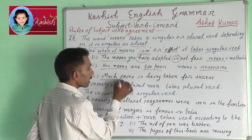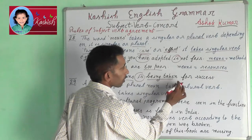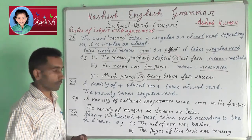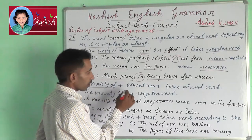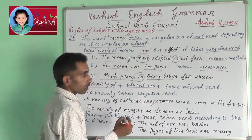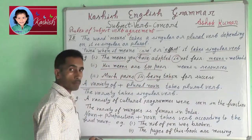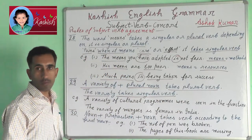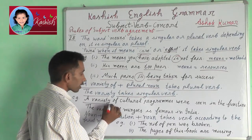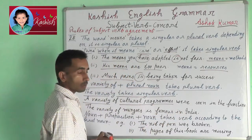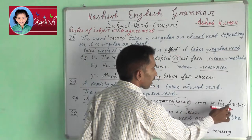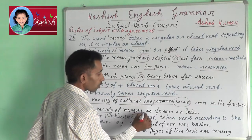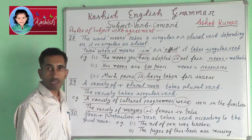Much pain is being taken for success. Rule 29: A variety of plural nouns takes a plural verb. The variety takes a singular verb. For example: a variety of cultural programs was seen in the function. The variety of mangoes is famous in India.